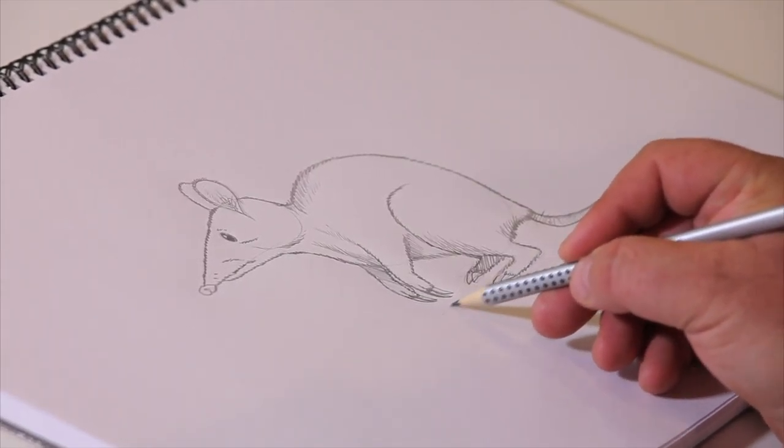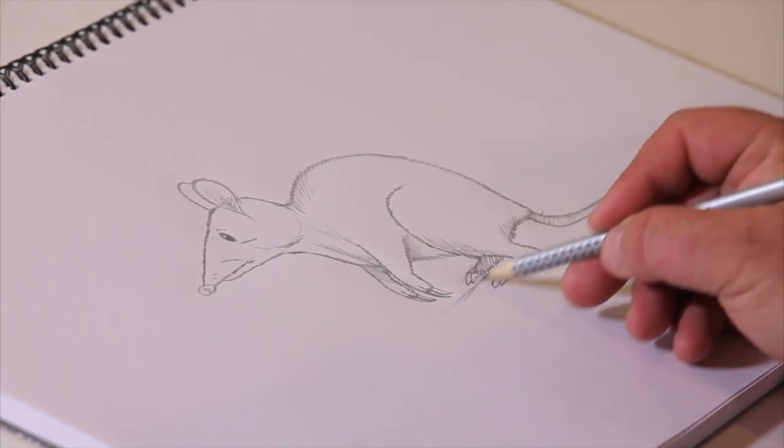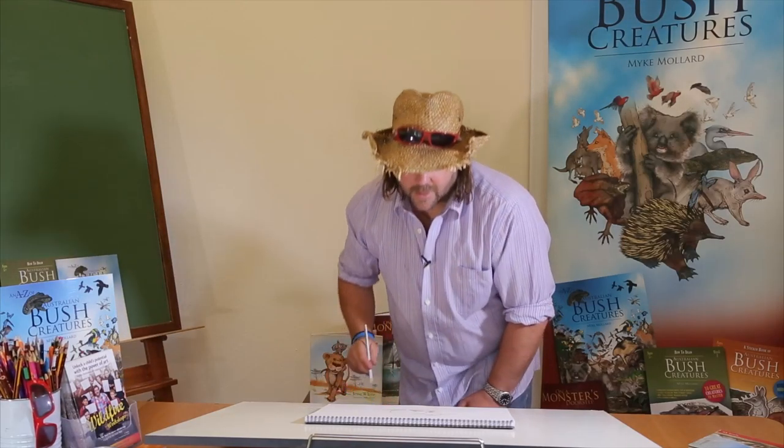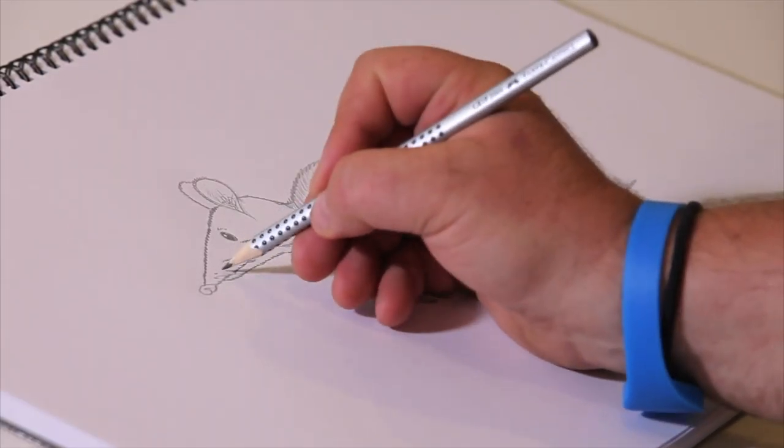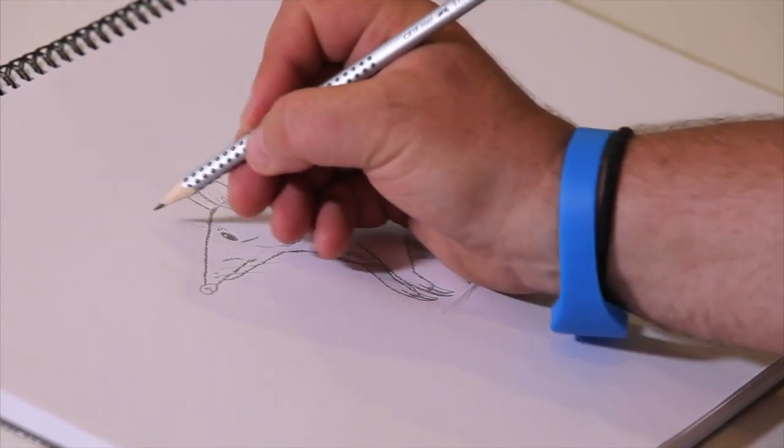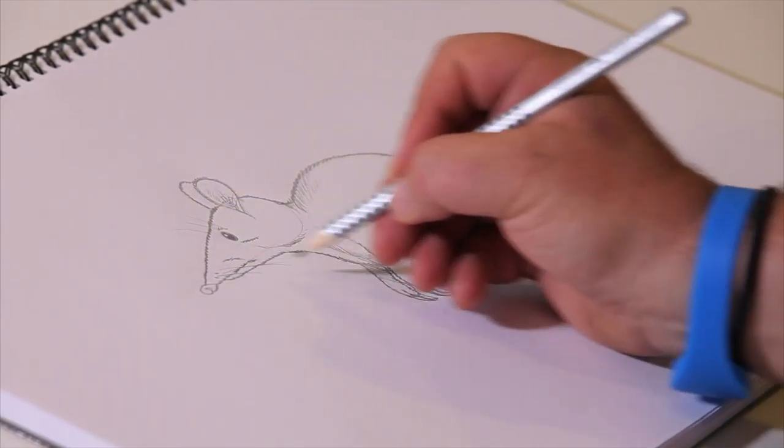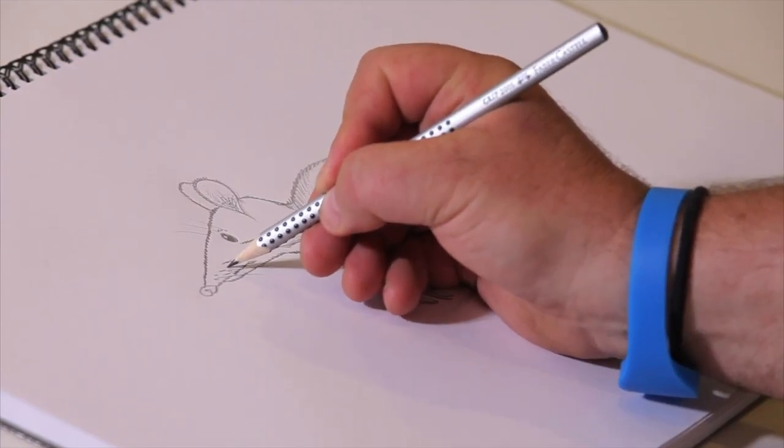Now I'm just going to do a light little shadow under his body. Give him a little bit of depth. And I think there's your bandicoot. Now you can touch him up a little bit. Give him a few whiskers. A few whiskers above his eyes. A few little marks.